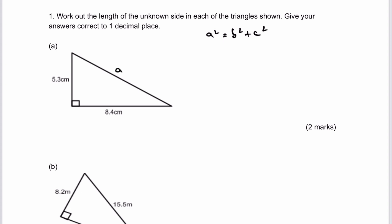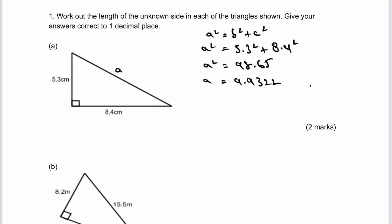Where a for me is always the hypotenuse of a right-angled triangle. So in this particular case, b is going to be 5.3 and I'm going to square that, plus c which is going to be 8.4, I'm going to square that, and all of that equals a squared. When I calculate that, I get a value of a squared of 98.65. If I then square root it, I get a equals 9.9322, which therefore to one decimal place, the unknown side is a equals 9.9 centimeters.